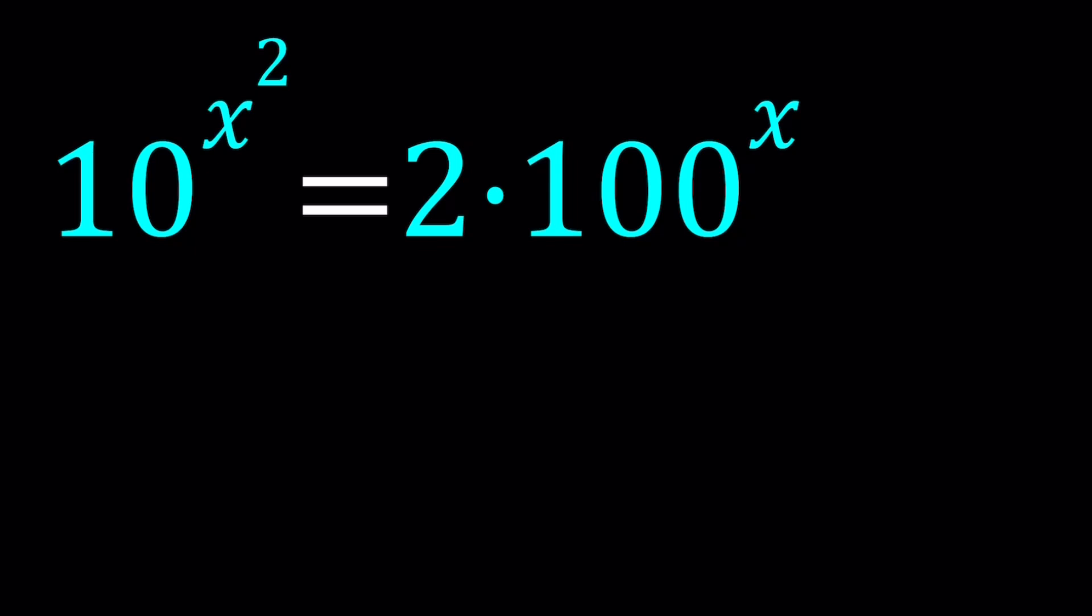Now this problem is not easy to guess and check because if you look at the x values it's not going to be nice values. So here's what we're going to do. We have a 10 and a 100 so we can write the 100 as 10 to the second power.